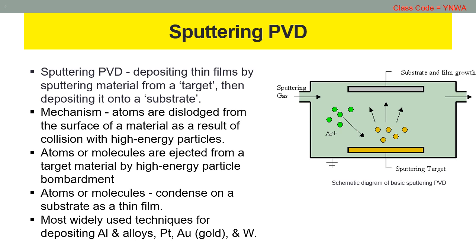Look at the schematic diagram here. Sputtering is a mechanism by which atoms are dislodged from the surface of a material as a result of collision with high energy particles. Thus, PVD by sputtering refers to a physical vapor deposition technique wherein atoms or molecules are ejected from a target material by high energy particle bombardment, so that the ejected atoms or molecules can condense on a substrate as a thin film.